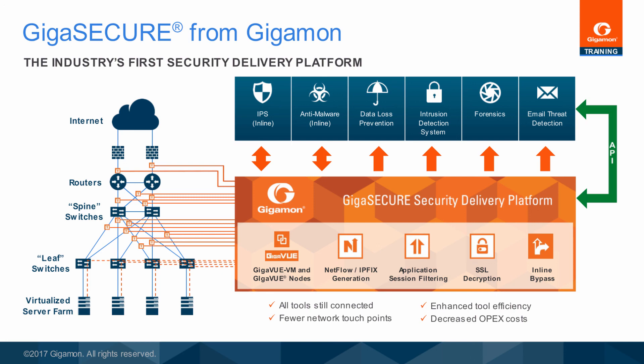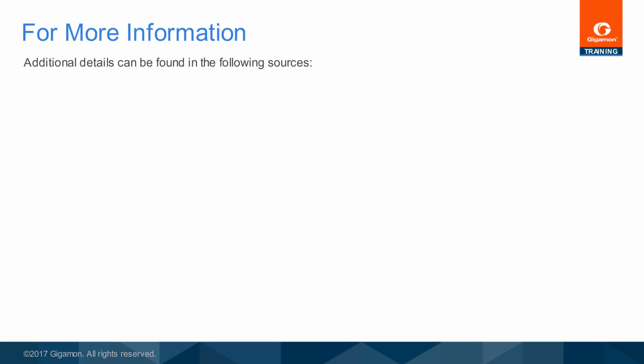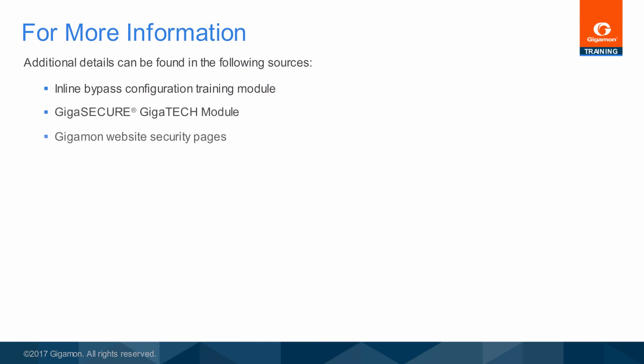For more information about GigaSECURE, refer to the GigaSECURE training module. Additional details about inline bypass can be found in the inline bypass configuration training module, the GigaSECURE training module, the Gigamon webpages related to security, the GigaVUE HC2 data sheet and product brochure, the HVUE web interface online help topics, and in the user guides.